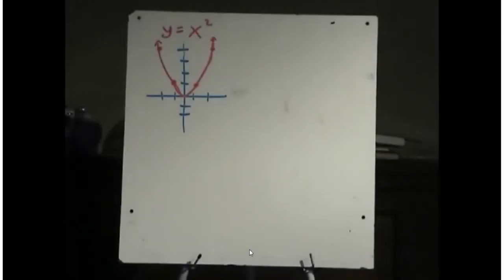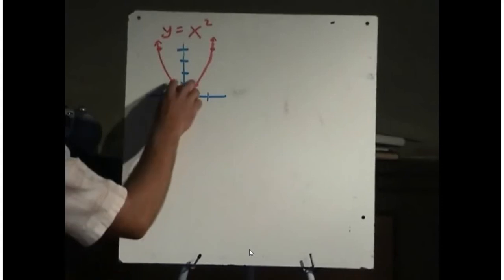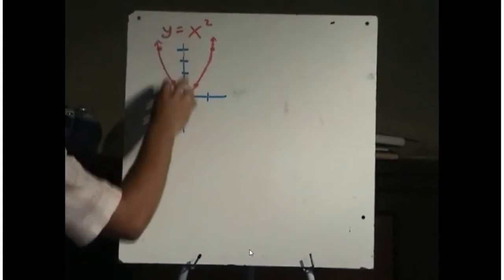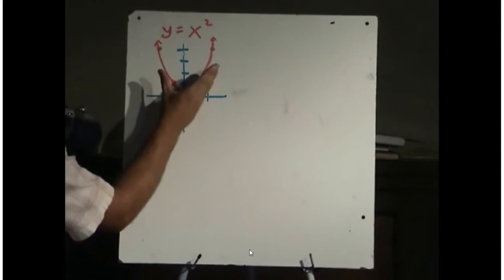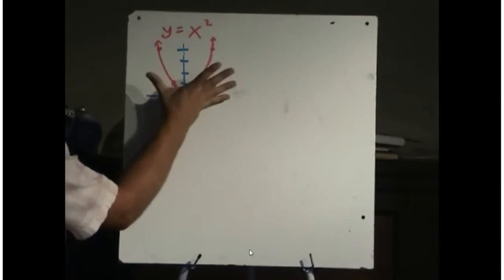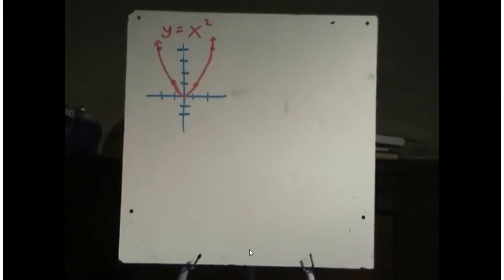In this lesson we're going to look at expanding and compressing the graph. We've looked at moving it left and right. Now we're going to look at vertically expanding and compressing the graph, and then we'll look at horizontally expanding and compressing the graph. Here's a basic graph: y equals x squared.